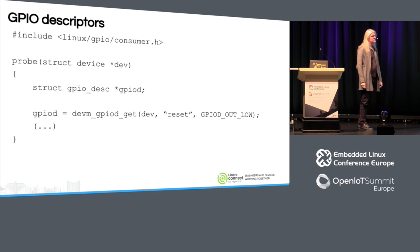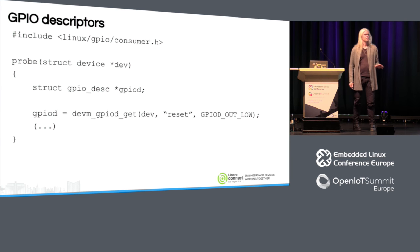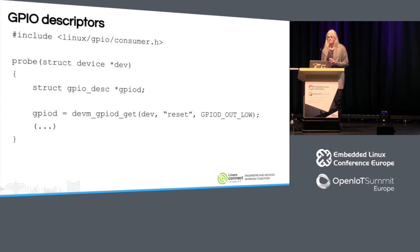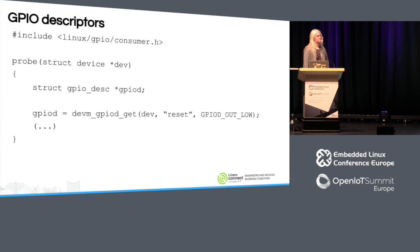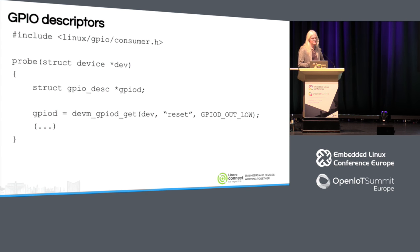GPIO descriptors — this is the big refactoring done inside the kernel. Alexandre Corbeau has driven it mostly. The motivation is that GPIO numbers are inherently unstable. You used to pass in a number instead of a device pointer and names. We didn't even have a get function — I'm already forgetting the old API. But it doesn't work because it doesn't scale and it's unpredictable.